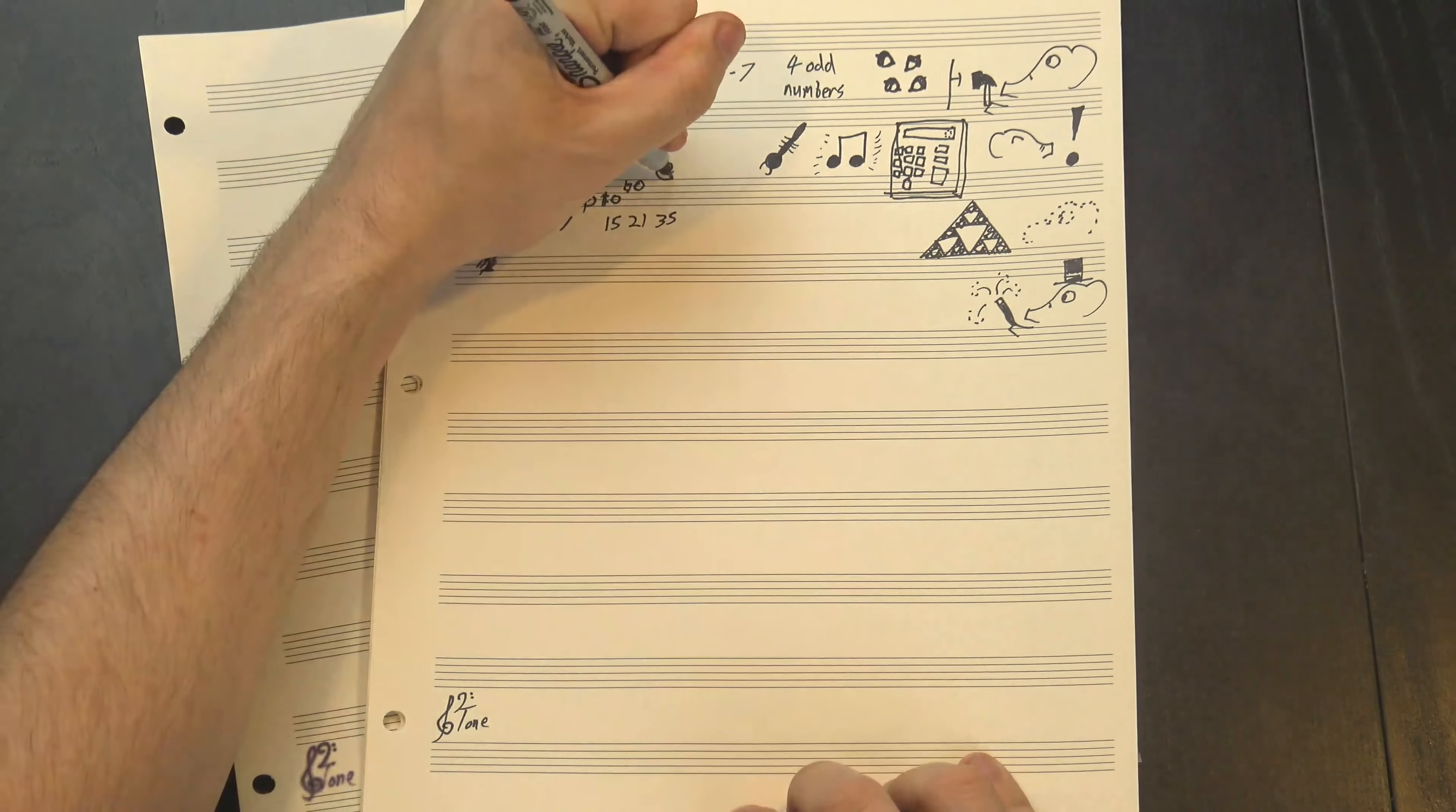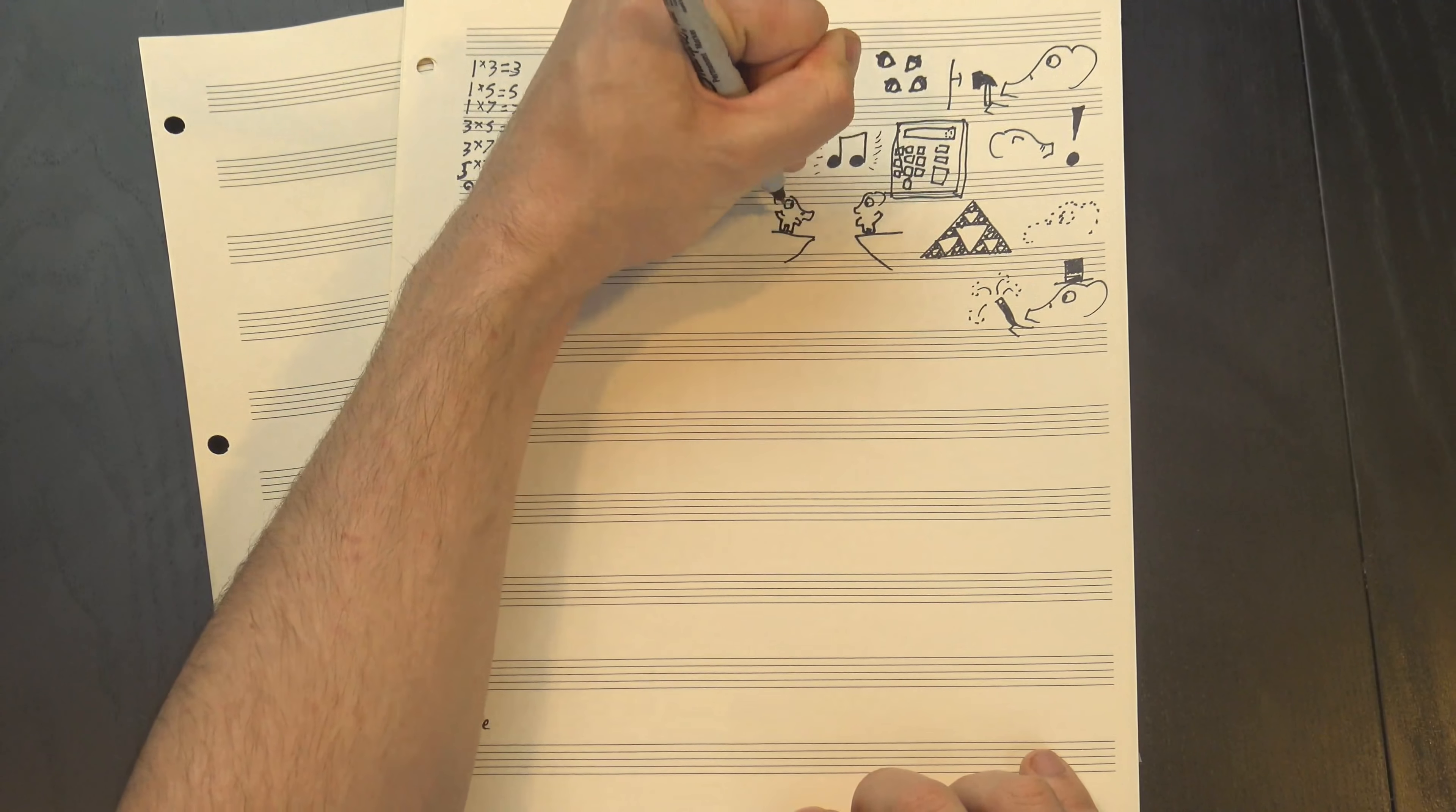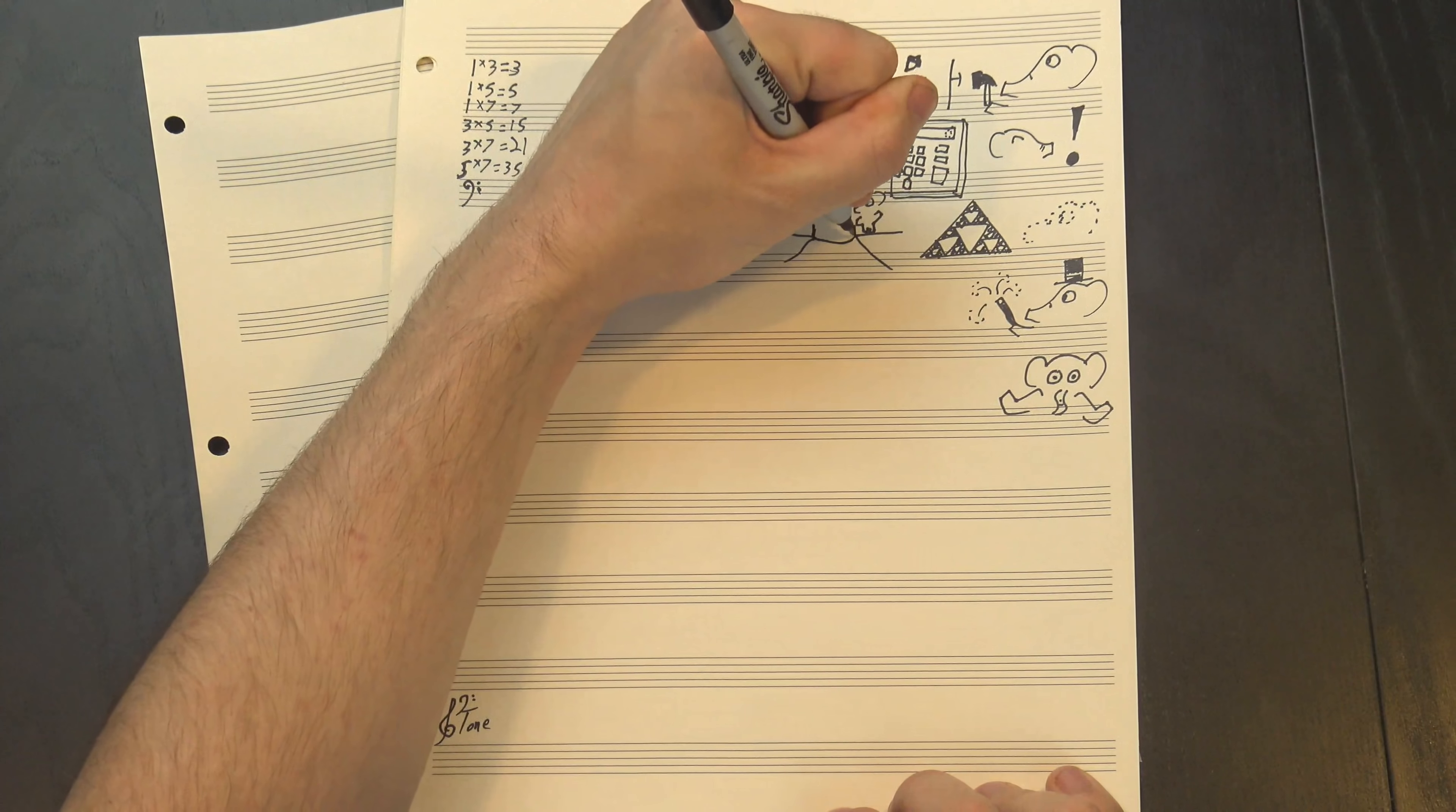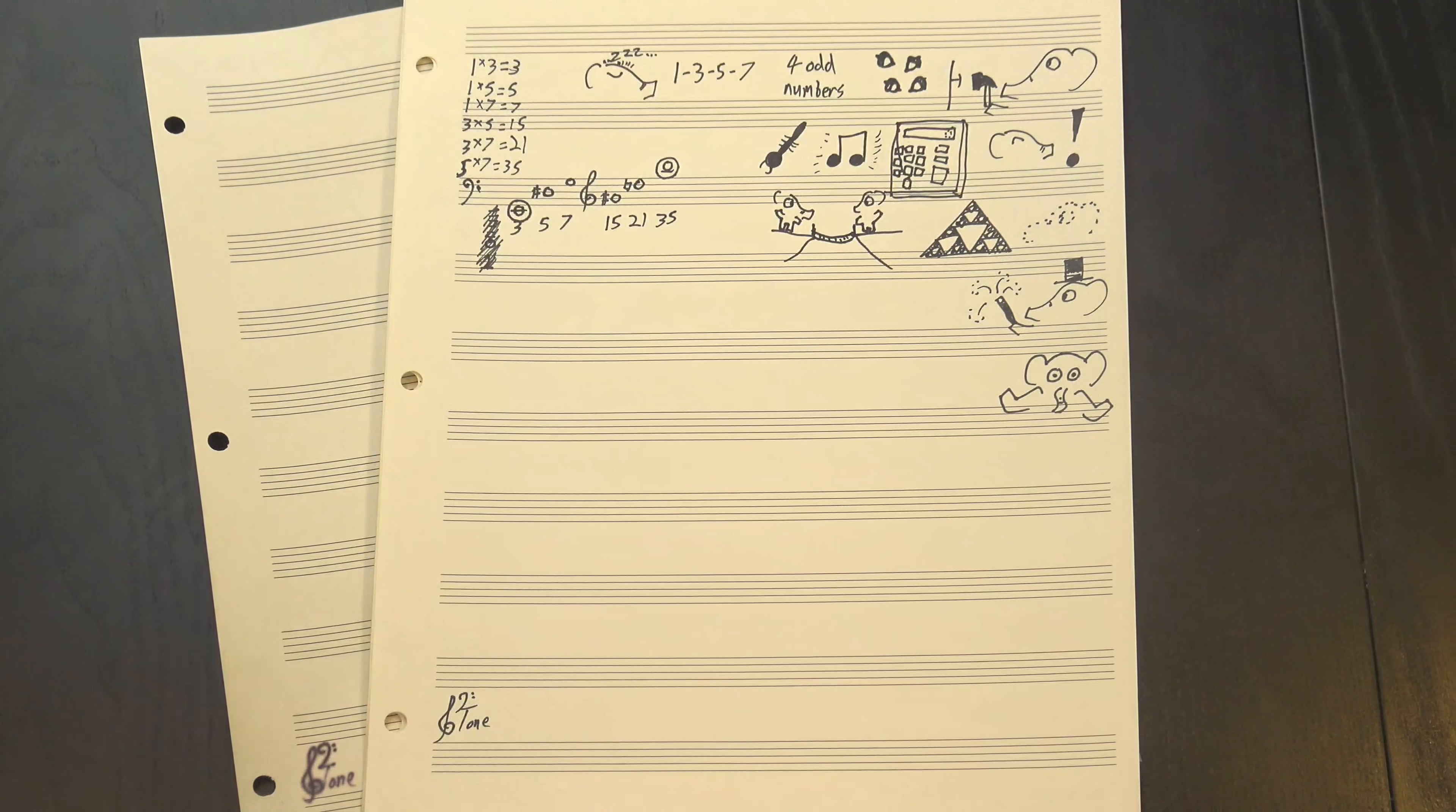It's really spread out though. The highest and lowest notes are like 3 and a half octaves apart. Fortunately, this system doesn't care about octaves, so we can just multiply and divide these by two until they're all right next to each other, giving us this.